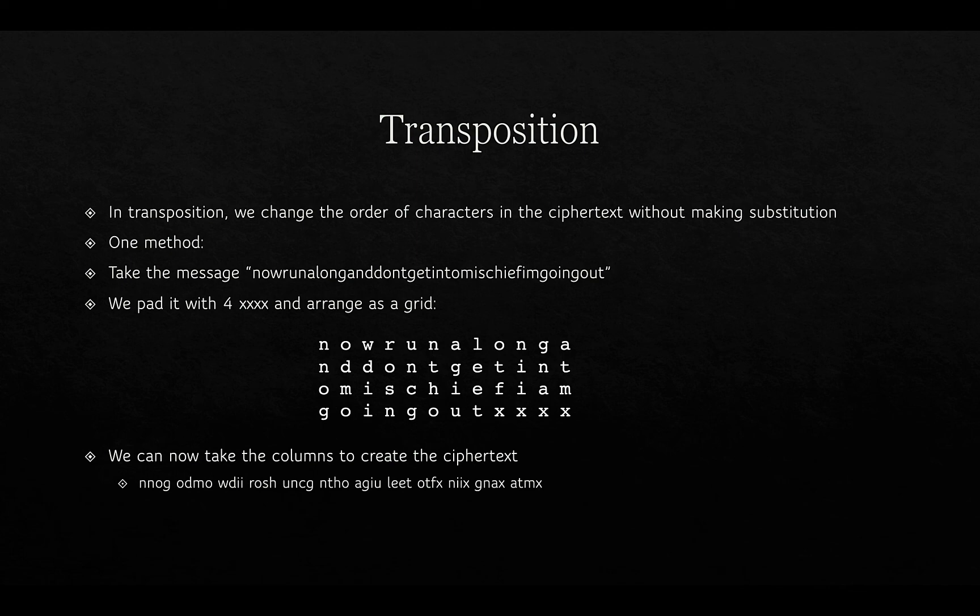In a transposition cipher, we change the order of characters in the ciphertext without making any substitution. Taking the message 'now run along and don't get into mischief, I'm going out,' we pad it with four X's and arrange it as a grid. We then take the columns to create the ciphertext — first column NNOG, then ODMO, and so on. This is called a transposition cipher.